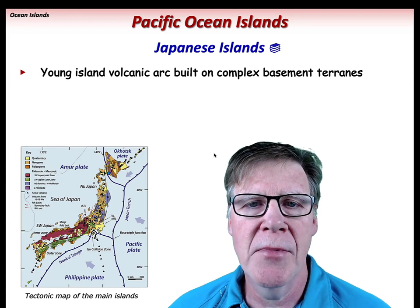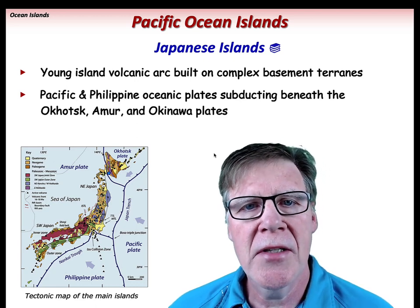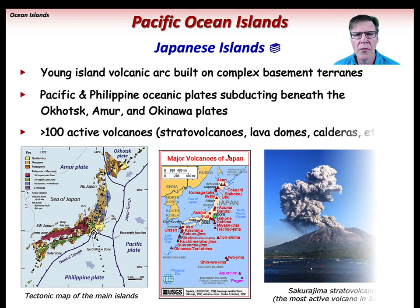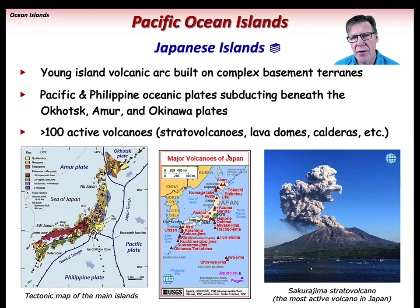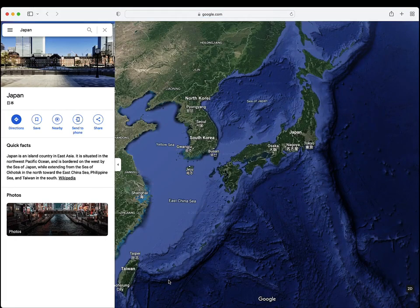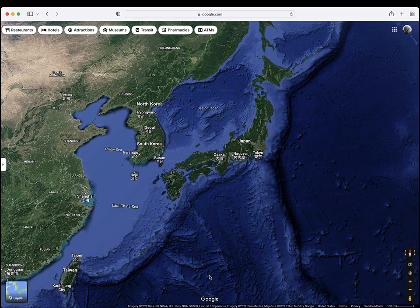The Japanese islands are a relatively young island arc built upon complex basement terrains. The islands are located where the Pacific and Philippine Oceanic Plates are subducting beneath the Amurian, Amur, and Okinawa Plates. Over 100 active volcanoes are present in the region, including stratovolcanoes, lava domes, and calderas. Sakurajima is a stratovolcano located in southwestern Japan and is the most active volcano in the region, located just east of Kagoshima, a city of almost 600,000. The Japanese archipelago is comprised of over 6,800 islands, stretching over 3,000 kilometers along Eurasia's Pacific Margin.